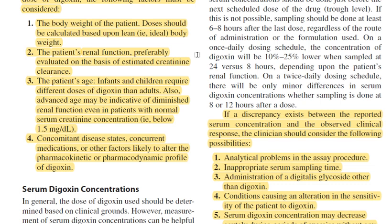The third factor is the patient's age. Infants and children require different doses of digoxin than adults. Also, advanced age may be indicative of diminished renal function even in patients with a normal serum creatinine concentration — that is, below 1.5 mg/dL. Therefore, age must also be considered when calculating the digoxin dose.